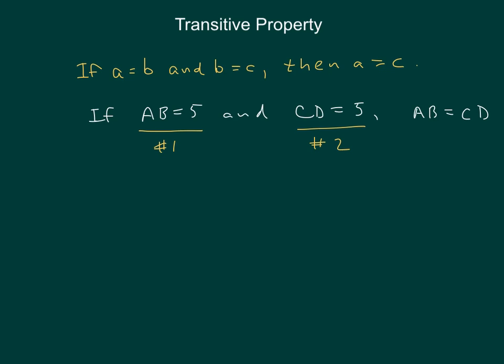Two conditions need to be met to use the transitive property. The first condition is that we have two separate equations, and we've got that. Equations have equal signs.